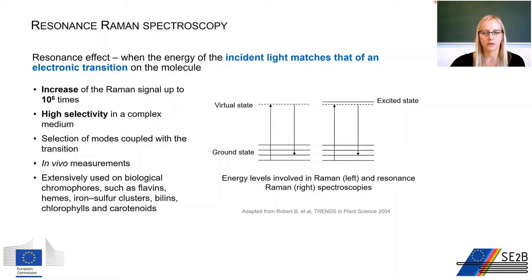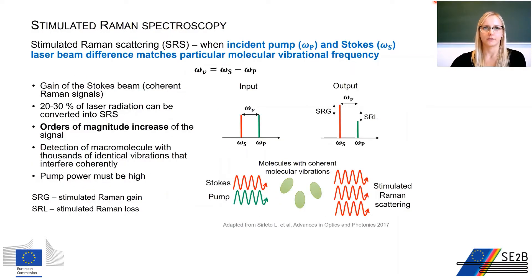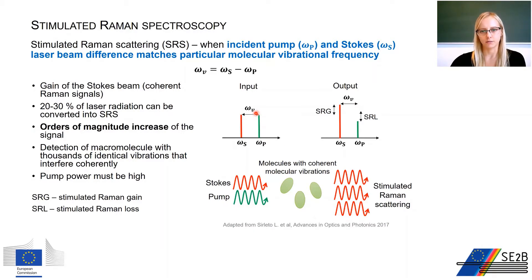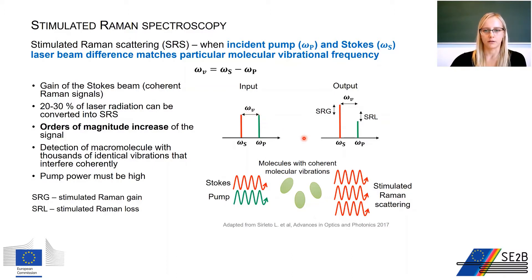Resonance Raman spectroscopy is widely used for biological chromophores and photosynthetic complexes containing chlorophylls and carotenoids. Another technique is stimulated Raman spectroscopy, where Raman amplification occurs when the energy of an intense pump beam is transferred to a weak signal beam by stimulated Raman scattering. This occurs when the pump and Stokes beams are incident on a sample and the difference in frequency between them matches a particular molecular vibrational level, producing gain in the Stokes beam and loss in the pump beam.